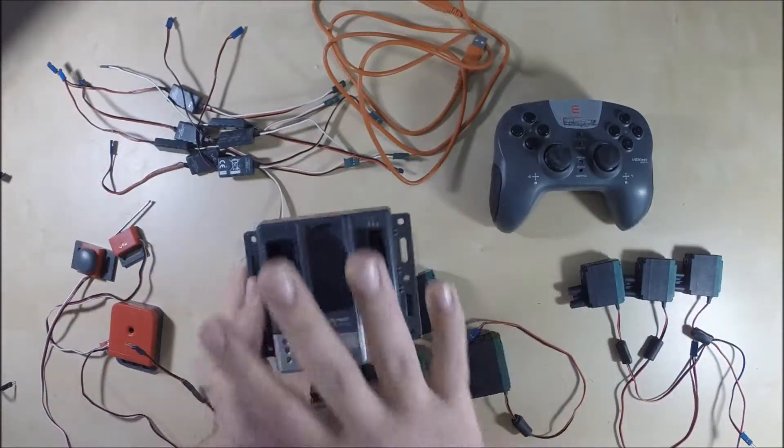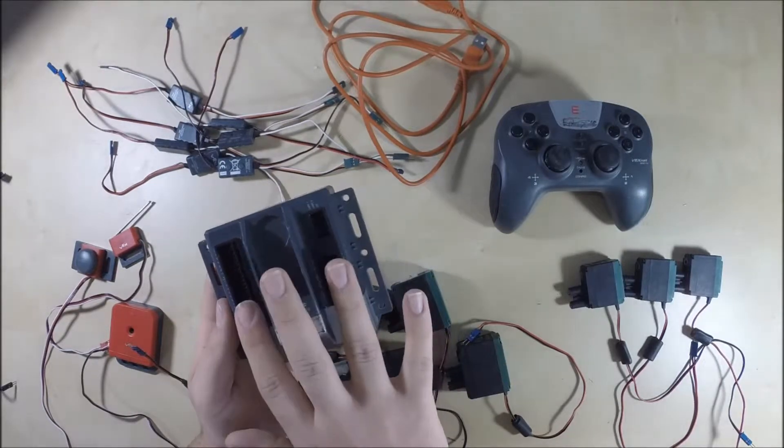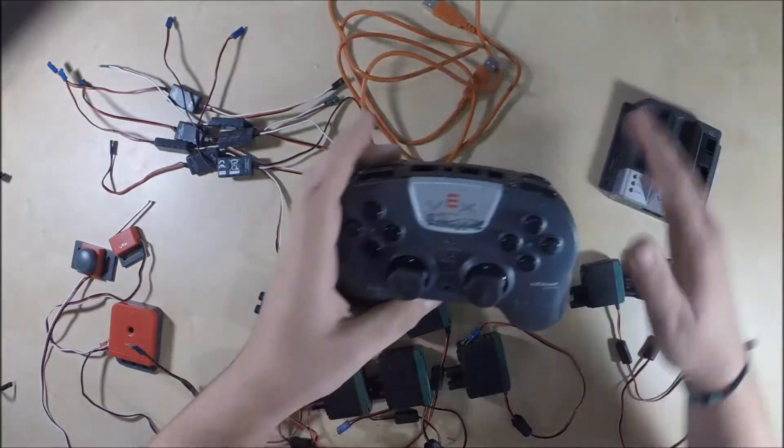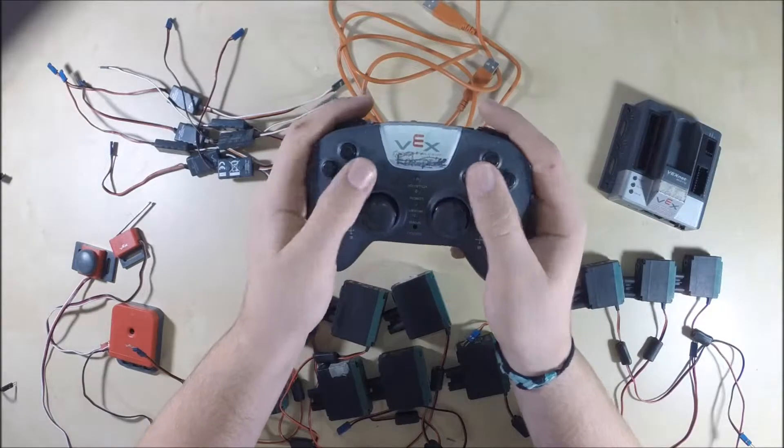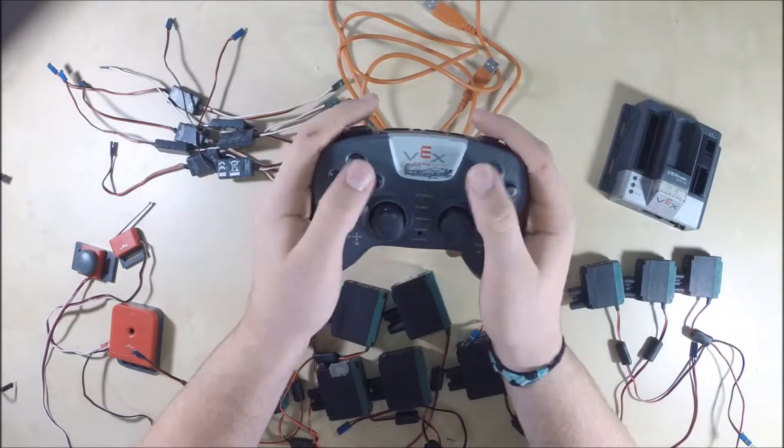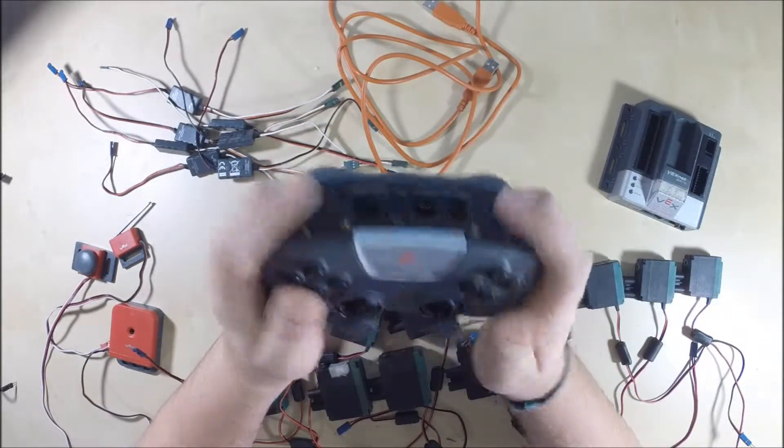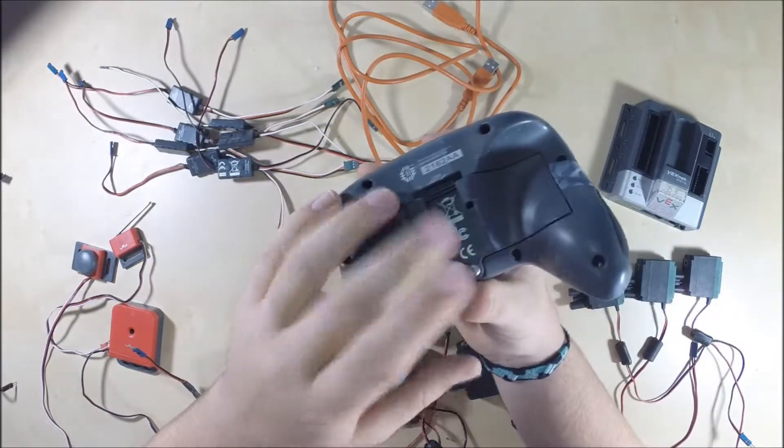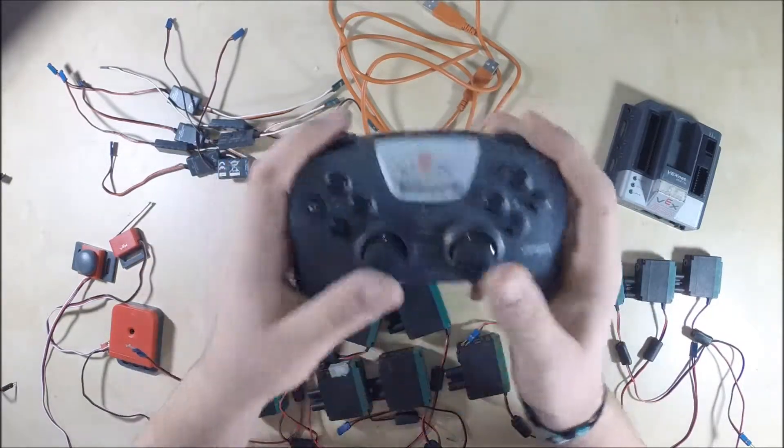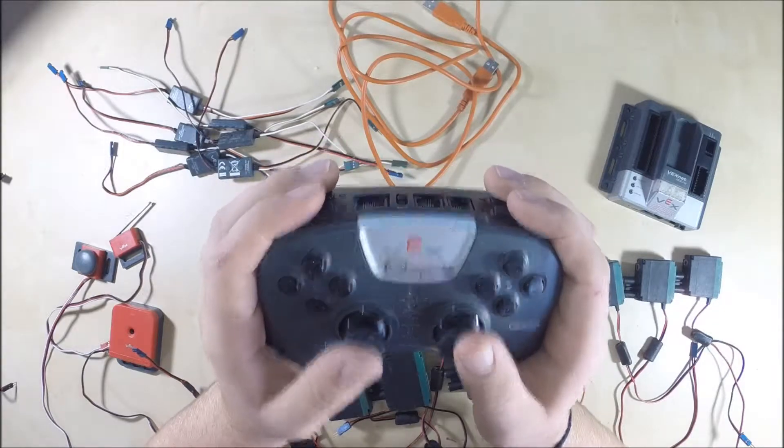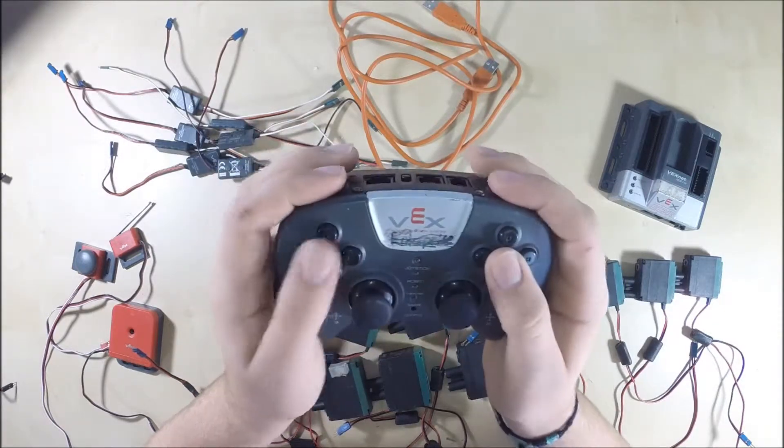And then this is the joystick. It looks like a standard Xbox controller. You have buttons, joysticks, bumpers, and then on the back goes the batteries. So this is how you use your RC control driver control—you use this to drive the robot manually.